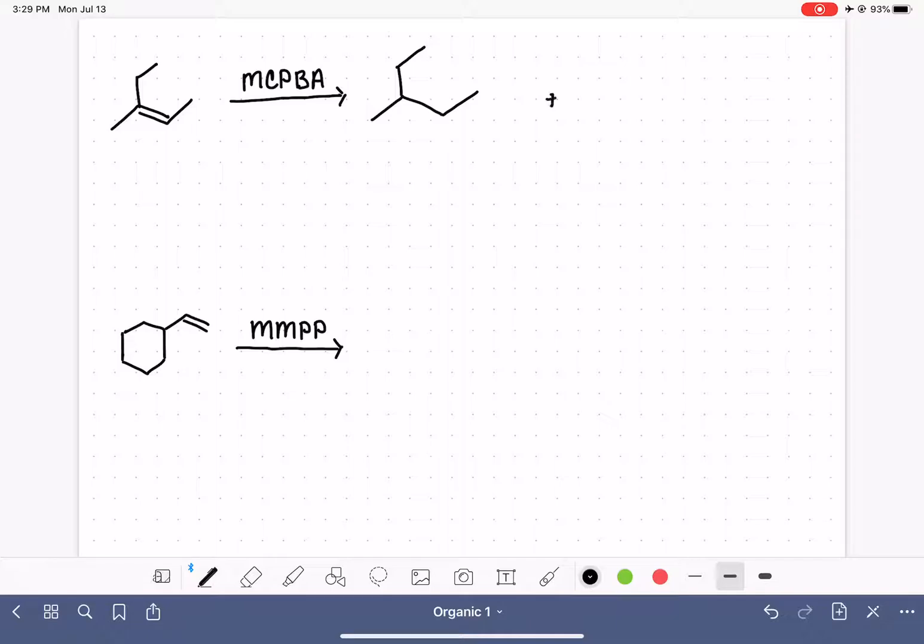Actually, they're going to end up in both possible scenarios. So I need to draw two different products, one product where my OH groups are in this orientation, and one product where my OH groups are in this orientation. So they're always anti to each other, but in terms of is the left one up or is the left one down, we have to draw both.